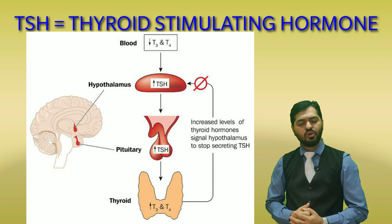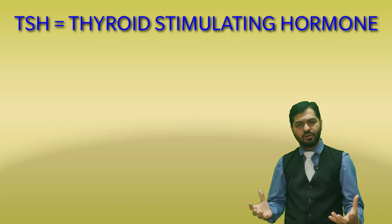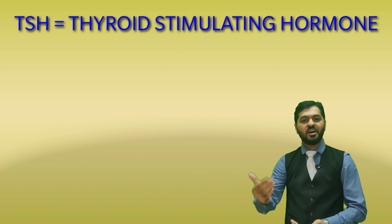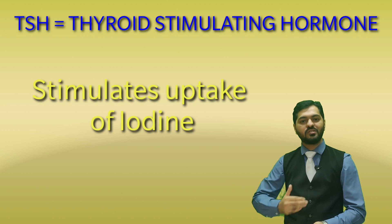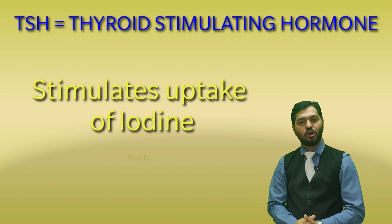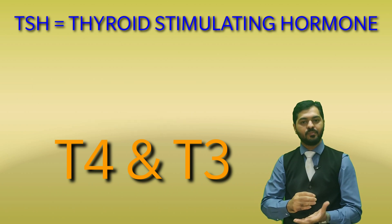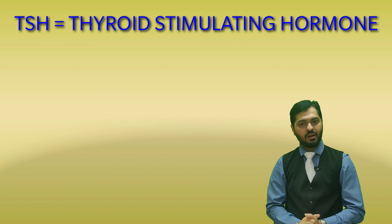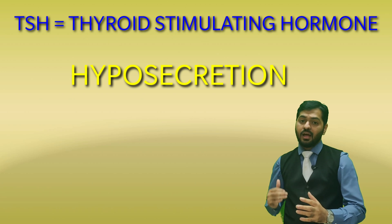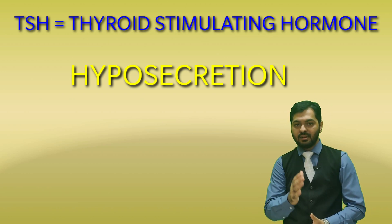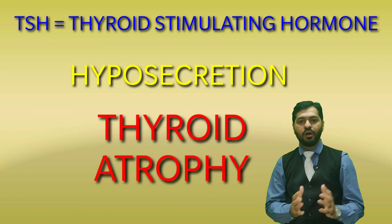The major role of TSH is to stimulate the thyroid gland to increase its uptake of iodine. Since there is more iodine uptake, there will be more synthesis and secretion of thyroxine hormone, because thyroxine contains iodine as one of its major ingredients. If there is hyposecretion of TSH, the thyroid gland will not be stimulated, resulting in shrinking of the thyroid gland — a condition known as thyroid atrophy.